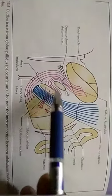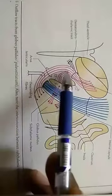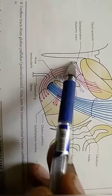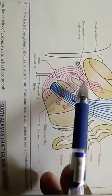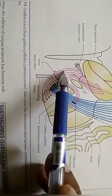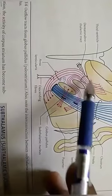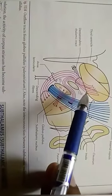The fasciculus lenticularis and ansa lenticularis both join with the dentatorubrothalamic tract, and together these three form the thalamic fasciculus, which ultimately projects into the ventrolateral and ventroanterior nuclei of the thalamus. From the thalamus, these fibers ultimately project to the motor and premotor areas of the cerebral cortex. The reciprocal connection between globus pallidus and the subthalamic nucleus forms another fasciculus known as the subthalamic fasciculus. Some output from the globus pallidus also goes to the substantia nigra.